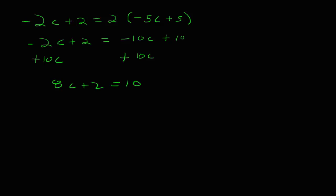And as promised, this is our two-step equation. Get rid of the constant. Subtract 2 from both sides. 8c is equal to 8. Divide both sides by the coefficient of the variable, and c is equal to 1.